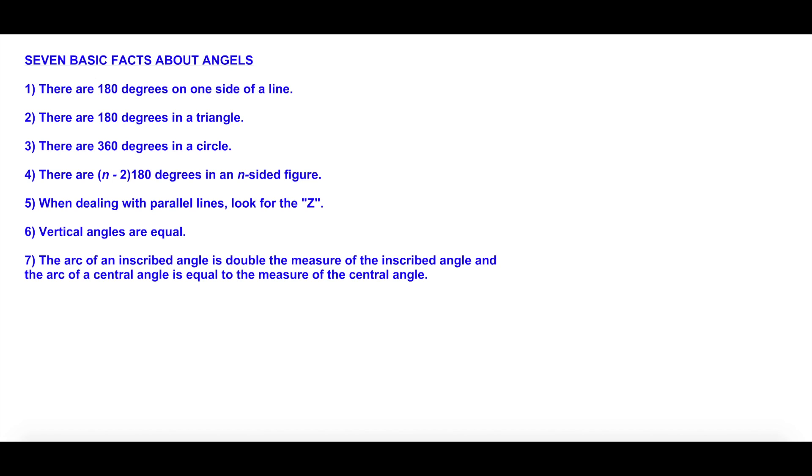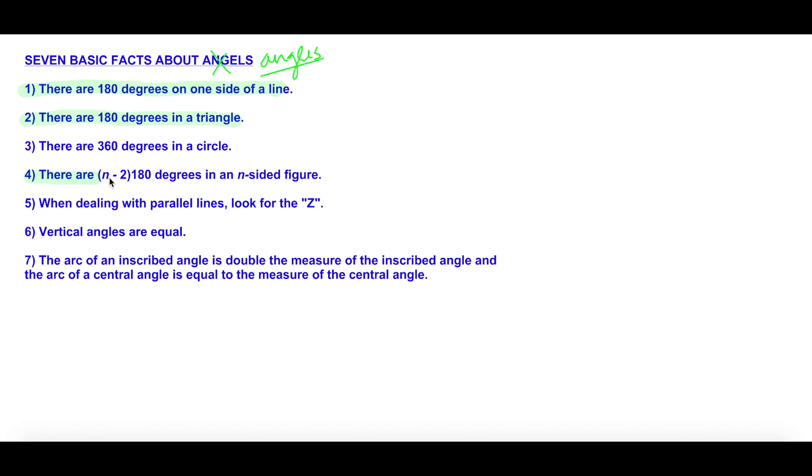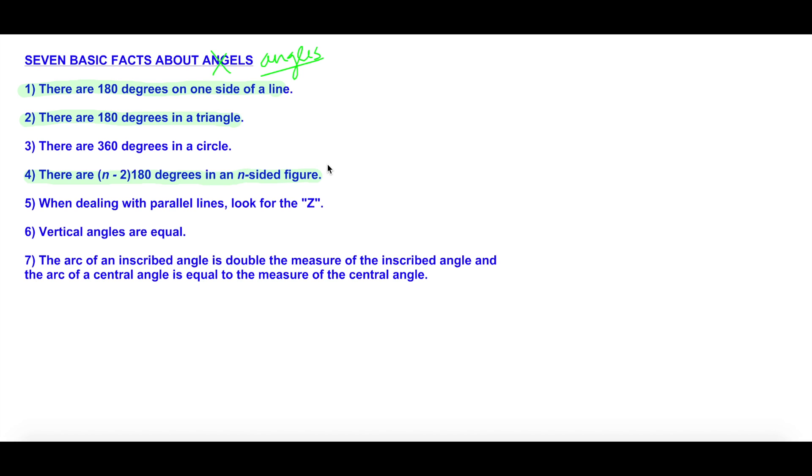So here we have it, the seven basic facts about angles. First thing we're going to cover today is that there are 180 degrees on one side of a line. We're also going to cover that there are 180 degrees in a triangle. And lastly, there are (n-2) times 180 degrees in an n-sided figure. Now if that last fact sounded like gibberish to you, don't worry about it because we're going to go over the questions.